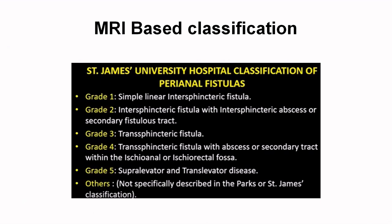Grade 1 and 2 correspond to I (inter-sphincteric). Grade 3 and 4 correspond to T (trans-sphincteric). Grade 5 corresponds to S or E. Grade 1 is simple inter-sphincteric with no abscess. Grade 2 is inter-sphincteric with an inter-sphincteric abscess or a secondary fistula track. Grade 3 is trans-sphincteric. Grade 4 is trans-sphincteric with abscess or secondary track leading to the ischio-anal fossa. Grade 5 is supra-levator and trans-levator disease.